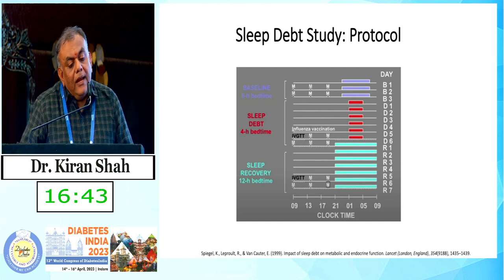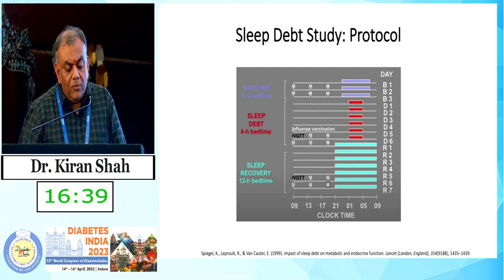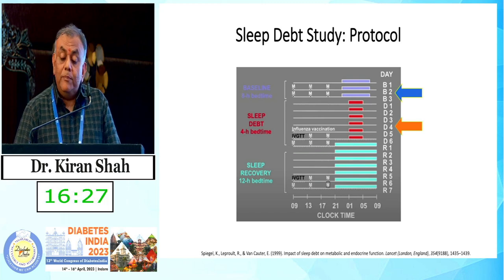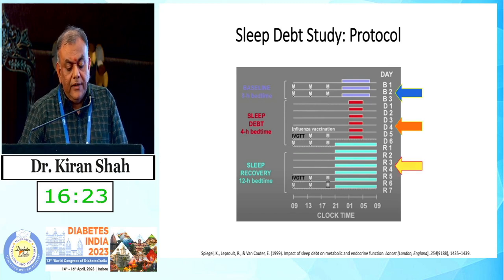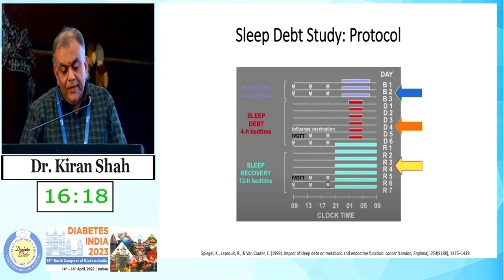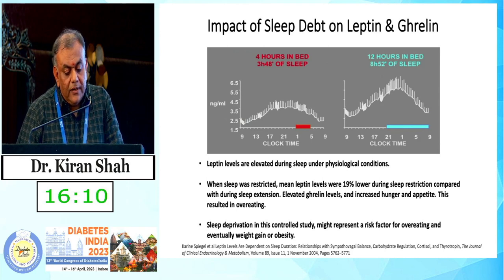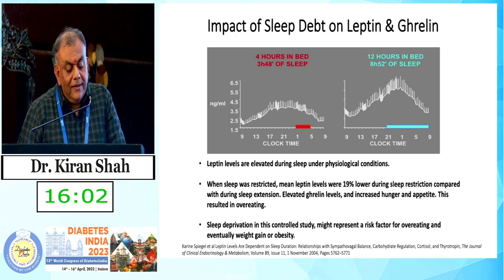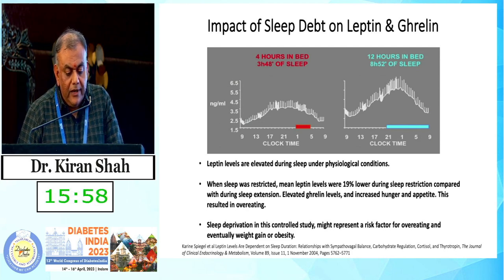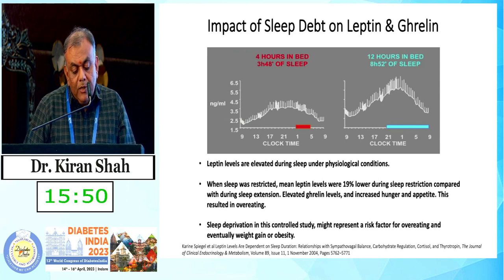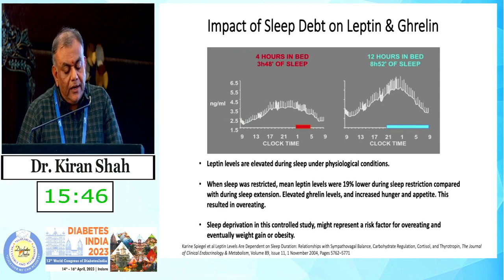This is the sleep debt protocol, in which young, healthy, lean, normal individuals were first given eight hours of sleep for three days, then sleep was curtailed to four hours of bedtime — that is the sleep debt — for six days, and finally given an extra four hours, around 12 hours of bedtime, for the next seven days. This study examined the impact of sleep debt on leptin and ghrelin — the satiety and hunger hormones. Leptin levels were around 19% lower during sleep restriction, resulting in overeating due to elevated ghrelin levels and a 33% increase in appetite for carbohydrate-rich diet. Sleep deprivation in this controlled study represents a risk factor for overeating and eventually weight gain or obesity.